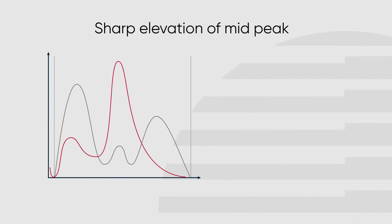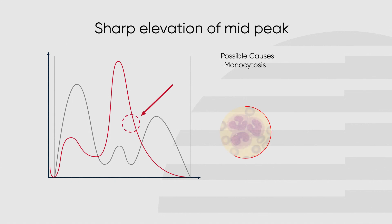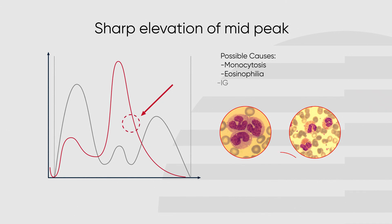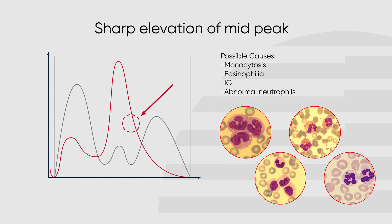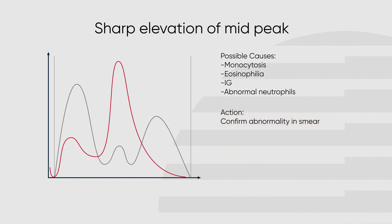A sharp elevation of the mid-peak could have several possible causes, such as monocytosis, eosinophilia, immature granulocytes, or abnormal neutrophils. The high increase of mid cells or abnormal cells causes the peaks of the mid cell and granulocyte populations to merge, and the analyzer is unable to distinguish between them. If this occurs, proceed to confirm the abnormality in smear.